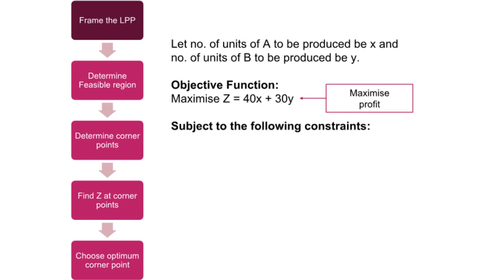Now, we consider the various constraints. Firstly, we have limited man hours. As it takes three hours to produce a unit of A and two hours to produce a unit of B, and the production capacity is 3,000 hours, we get the equation 3X plus 2Y less than equal to 3,000.